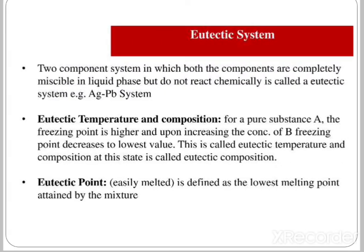Eutectic system: a two-component system in which both components are completely miscible in the liquid phase but do not react chemically is called a eutectic system, e.g., the silver-lead system. For a pure substance A, the freezing point is higher, and upon increasing the concentration of B, the freezing point decreases to a lowest value. This is called the eutectic temperature and composition. The eutectic point — meaning 'easily melted' — is defined as the lowest melting point attained by the mixture.